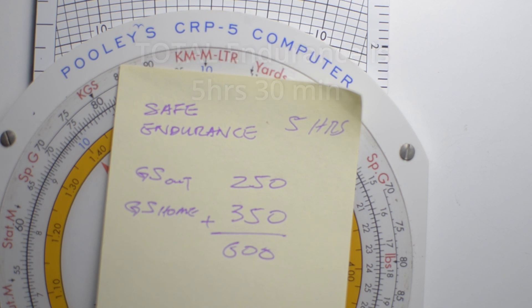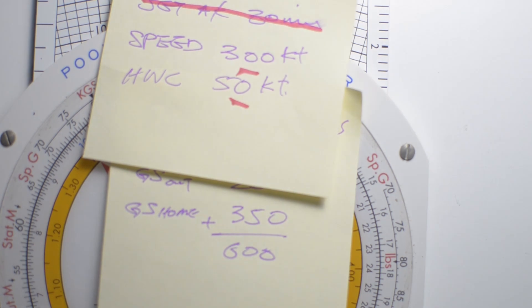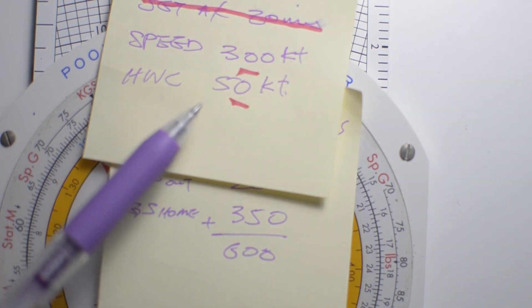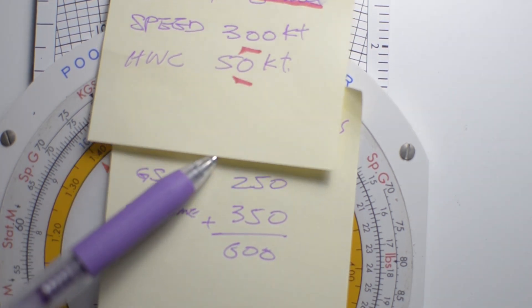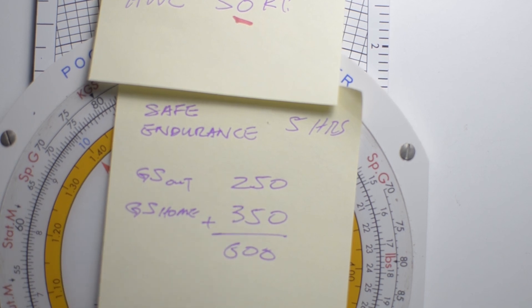Our ground speed out would have been 300 knots with a headwind component of 50, so our ground speed out would be 250, and when we turn the aircraft around and come back,